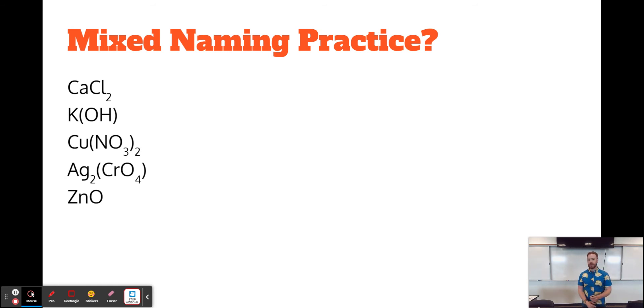So let's take them one by one and go from formula to name. The first one is just a binary ionic compound. Calcium is not a transition metal. And so it's just calcium chloride.